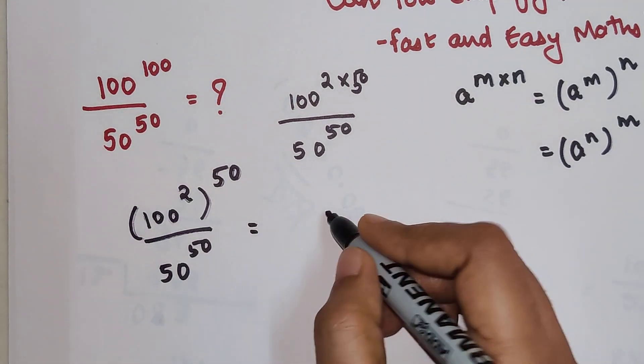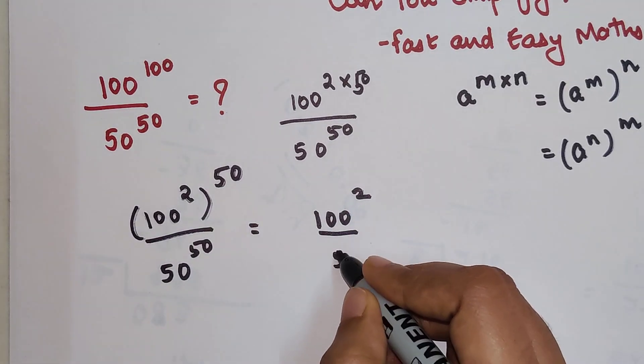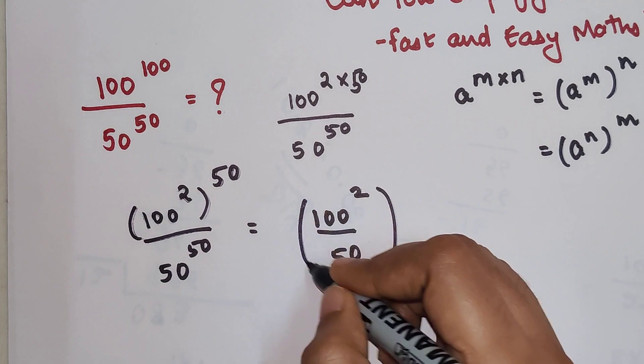So here I can now write this as nothing but 100 squared upon 50, the whole raised to 50.